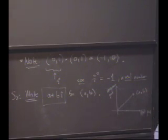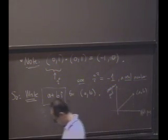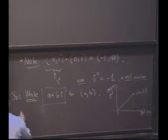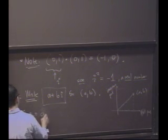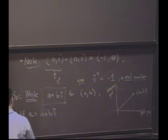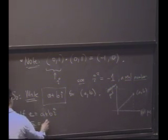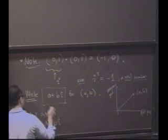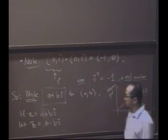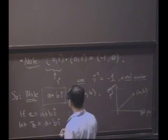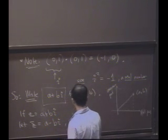Well, there's also several geometric notions associated with this creature. So, if z is a plus bi, we'll define z bar to be a minus bi. So, the imaginary part gets negated, and this is called the conjugate of z.